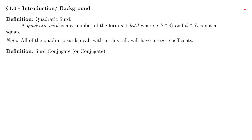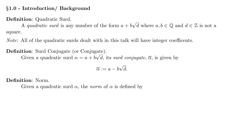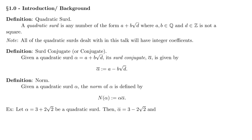Next we have the surd conjugate, or sometimes just called the conjugate. Given a quadratic surd alpha equal to a plus b square root of d, its surd conjugate — denoted with a bar over the top — is given by a minus b square root of d. And last we have the norm: given a quadratic surd alpha, the norm of alpha is defined as alpha times its conjugate. For example, if alpha is 3 plus 2 times the square root of 2, then its conjugate is 3 minus 2 square root of 2, and the norm of alpha equals 3 plus 2 square root of 2 times 3 minus 2 square root of 2, which is 3 squared minus 2 times 2 squared, which equals 1.